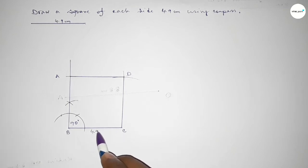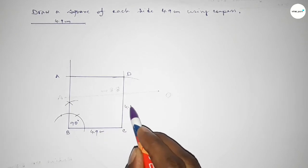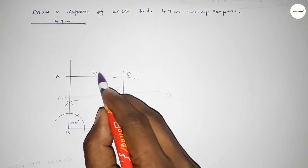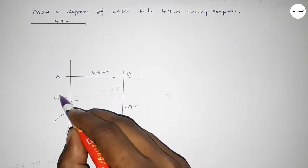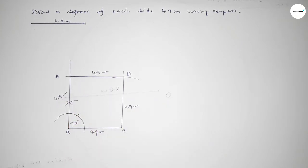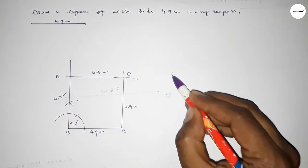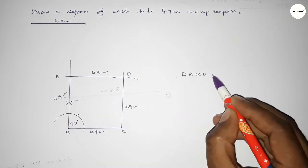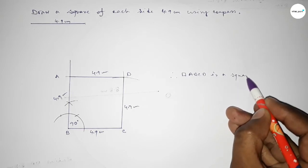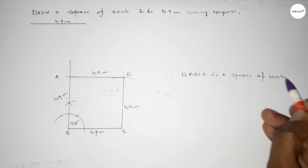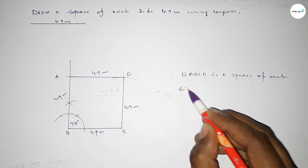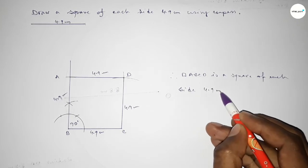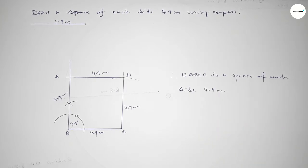Taking here point A and here D. This side 4.9 centimeters, this side 4.9 centimeters, this side 4.9 centimeters, and this side also 4.9 centimeters. Therefore ABCD is a square of each side 4.9 centimeters. This is the process to construct a square. That's all — thanks for watching. If this video is helpful, please share it with your friends.